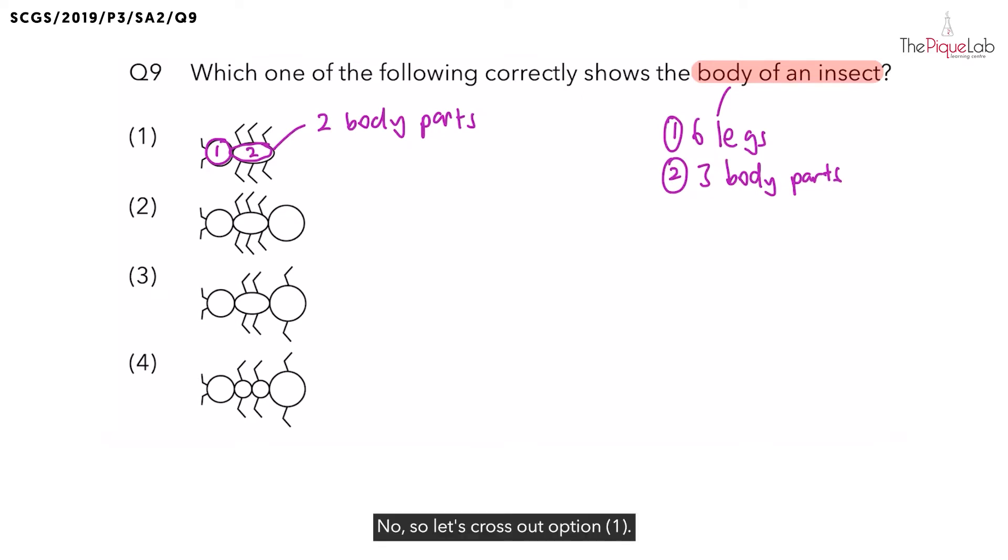Next, let's take a look at option 2. Now does the insect in option 2 have six legs? Yes. Does it also have three body parts? Definitely. So can option 2 be the answer? Yes, but let's take a look at the other options just to be safe.